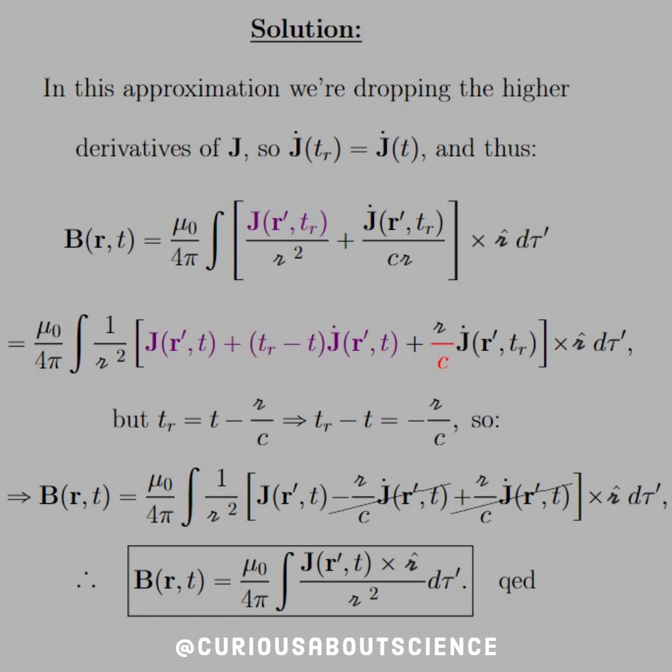And then we plug in the approximation that was given. And so with that, just plug and chug it away, and you see that we push that second part, script R over c, into the red as we try to factor out 1 over script R squared, just to make this simplification easier.